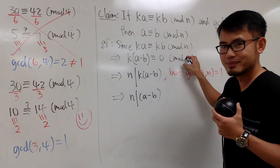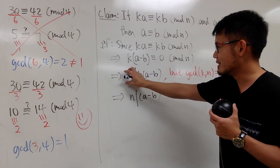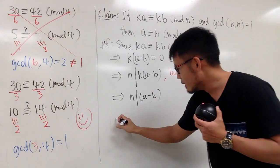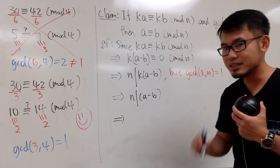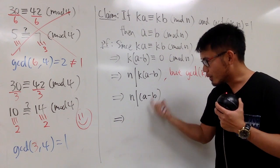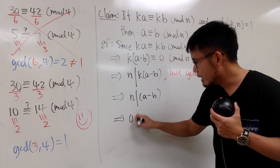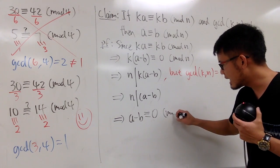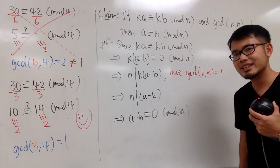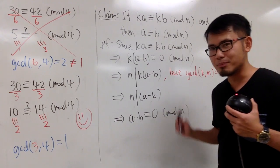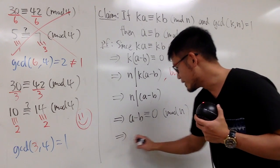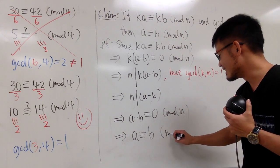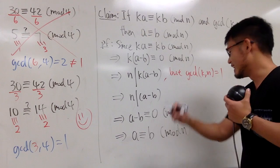Anyway, from here, n divides (a minus b). Earlier, we had a congruence. We went back to divisibility. Now we have divisibility. We can go back to congruence. So, this right here will tell us, this right here is a multiple of n. In another word, (a minus b) is congruent to 0, and this is the mod n. In the end, we can just add a b on both sides. So, we can finally conclude that a has to be congruent to b mod n like this.